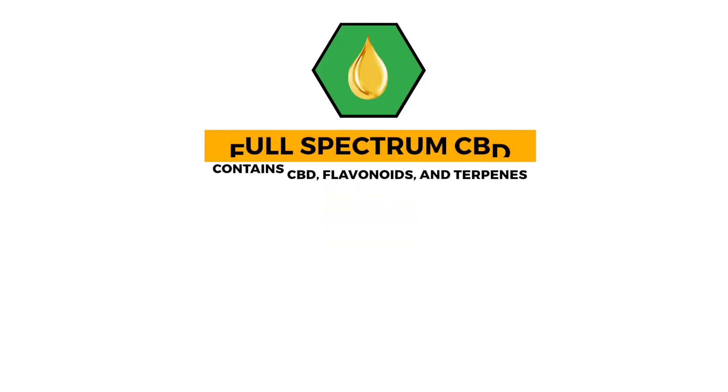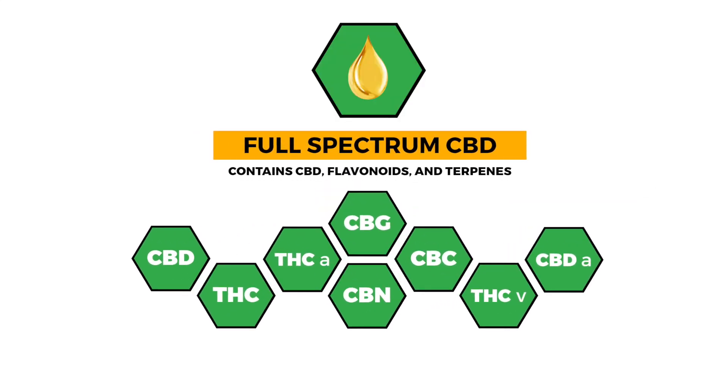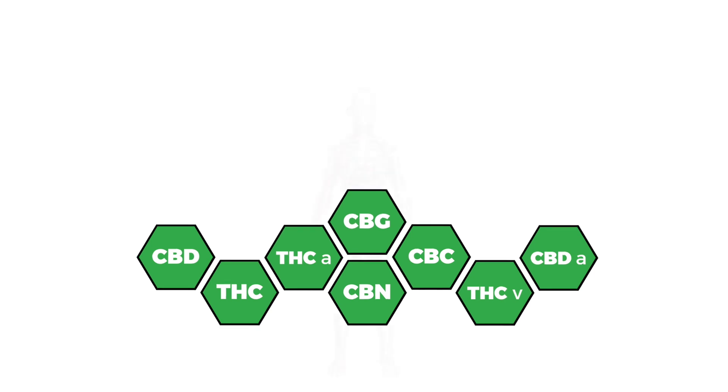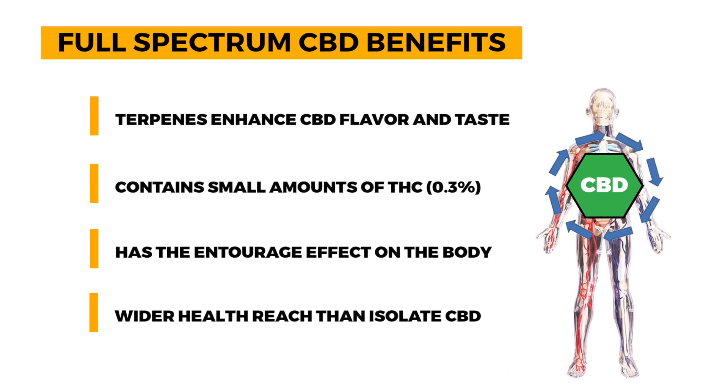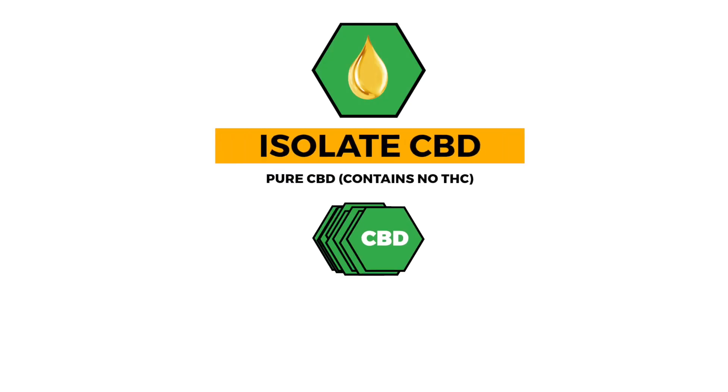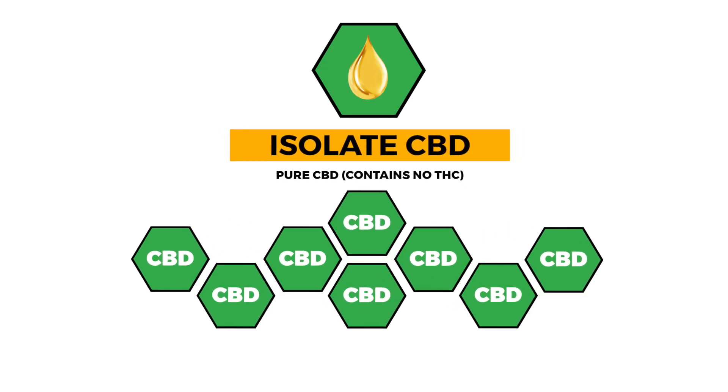Full spectrum contains CBD and a variety of other cannabinoids, flavonoids, and terpenes. These compounds work together synergistically to provide the body with everything this amazing plant has to offer. Isolate, also known as THC-free, is potent CBD in its purest form. It does not contain other cannabinoids and plant matter.